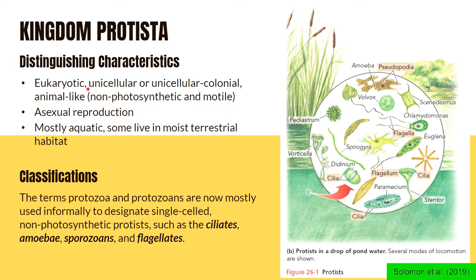They are eukaryotic, with a distinct membrane-bound nucleus within their cells. Most of them exist as unicellular organisms while some cluster together to form a unicellular colonial existence. They are mostly animal-like in that they do not perform photosynthesis — they cannot make their own food. They are also motile, moving around using their flagellum or cilia as modes of locomotion.